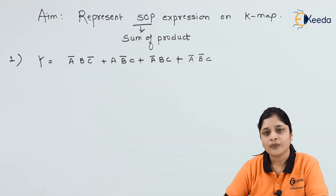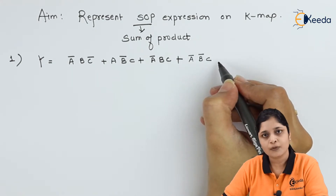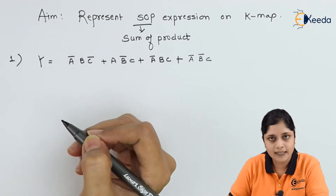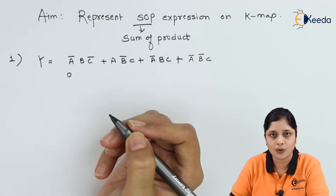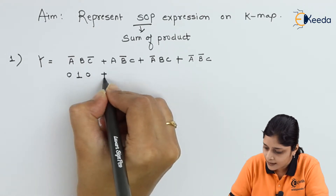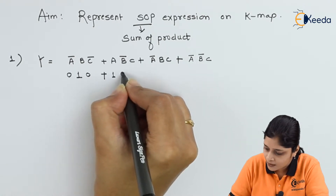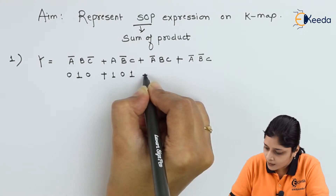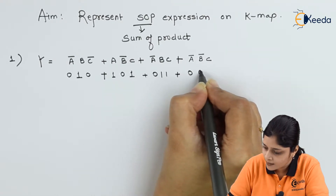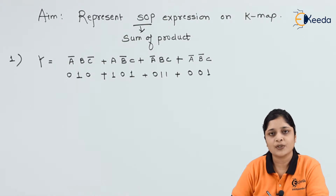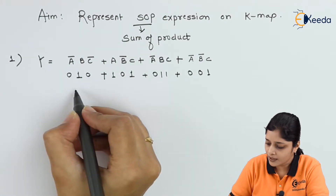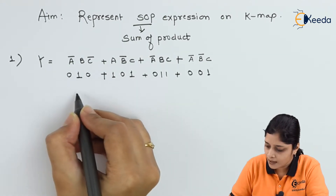Let's start how to solve. We have the given equation in SOP form. We will calculate its output. The logic is: if ā is there, represent it as 0; if b is there, then 1; if c̄ is there, then 0. So a·b̄·c gives 1, 0, 1; then ā·b·c gives 0, 1, 1; and ā·b̄·c gives 0, 0, 1.